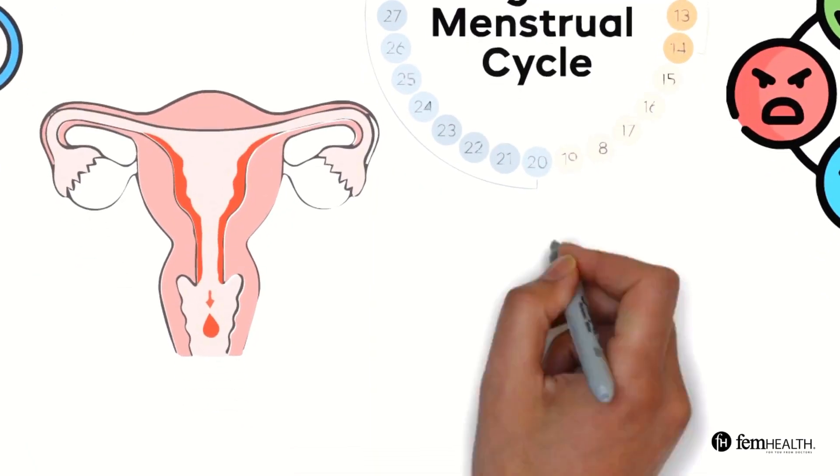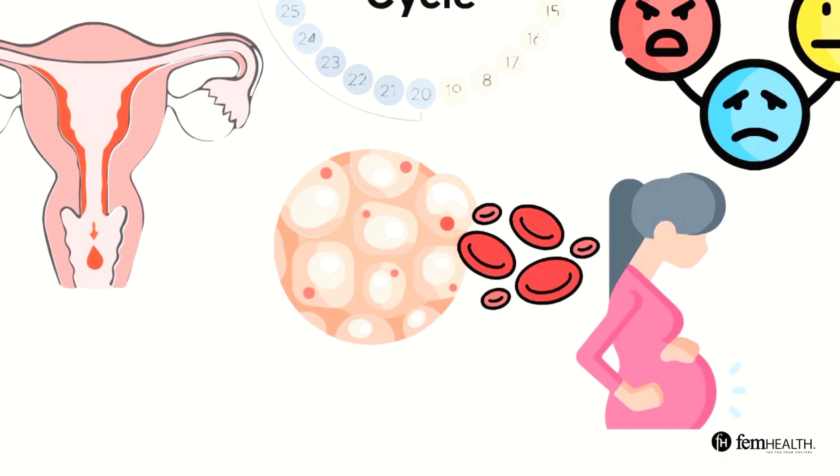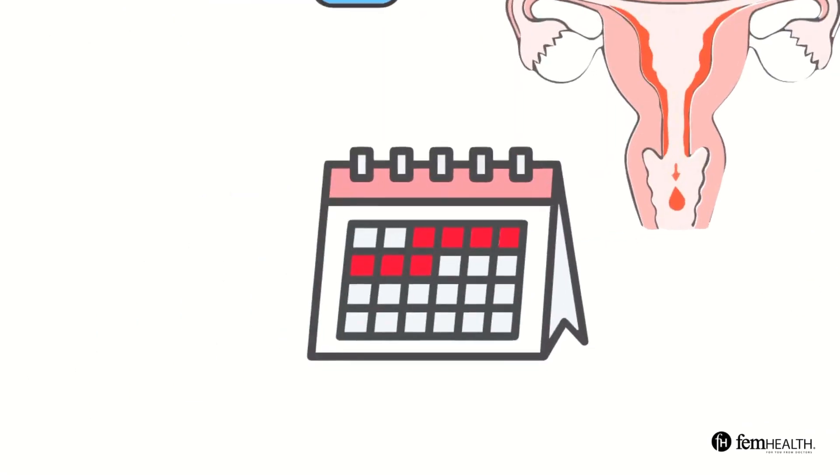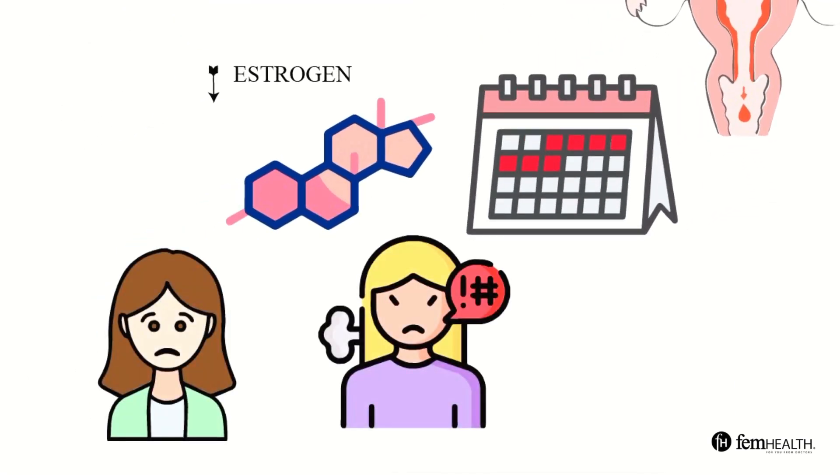This lining is made up of blood and tissue and it is what the body had prepared in case of a possible pregnancy. Most periods will last anywhere from three to seven days. Hormone levels especially estrogen can be low which can make some people feel tired, cranky, and sad. Cramps and bloating are also common symptoms during the menstrual phase.